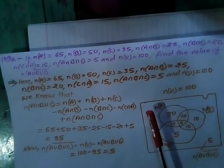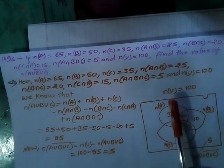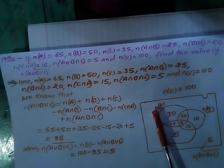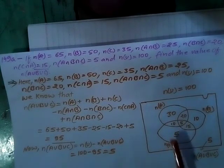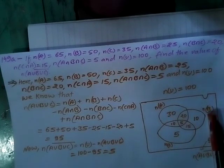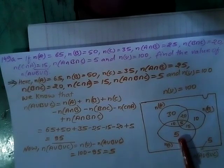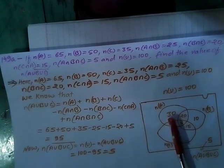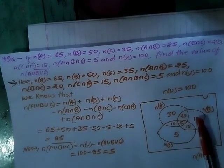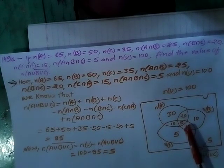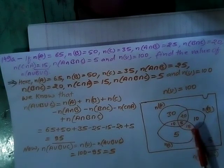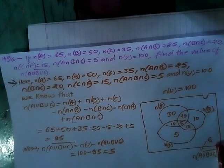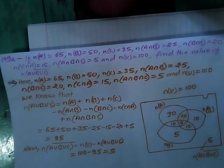In the Venn diagram: the big box denotes N(U) = 100, first circle denotes N(A), second circle denotes N(B), third circle denotes N(C). N(A) only = 30, N(B) only = 10, N(C) only = 5. The complement of all three sets = 5. Thus N(A∪B∪C)' = 5. That's all, thanks.